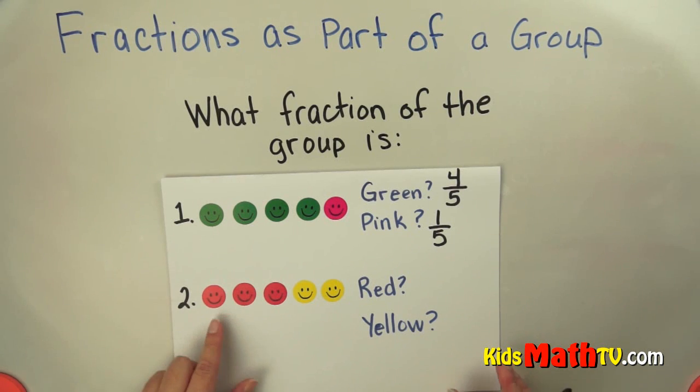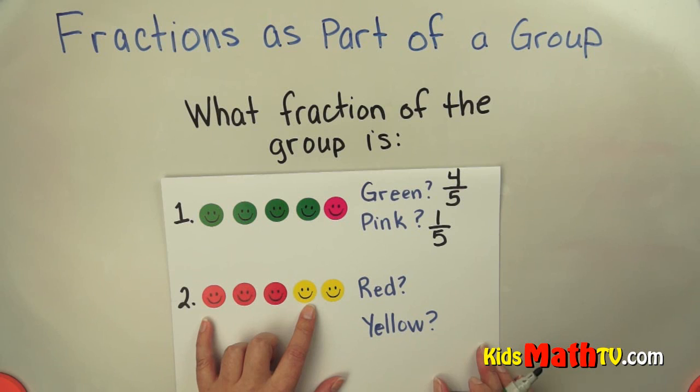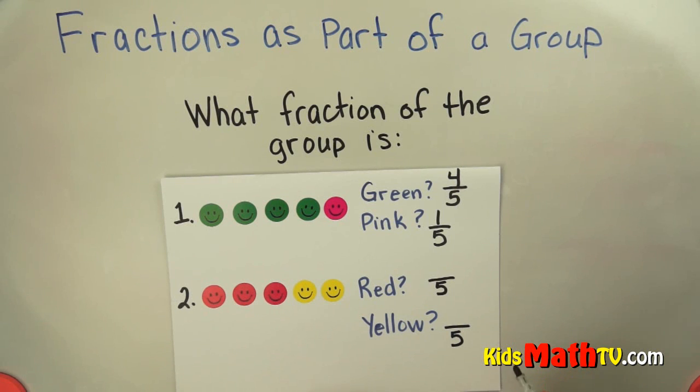Let's try this one down here. How many are in the group? One, two, three, four, five. It's a group of five again. So our total is still five - I'm going to write that as my total on both problems because it's going to be out of five.